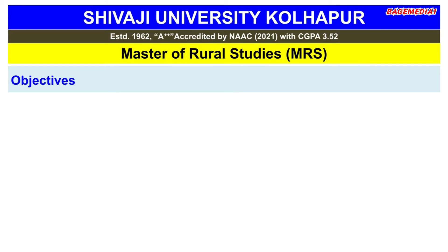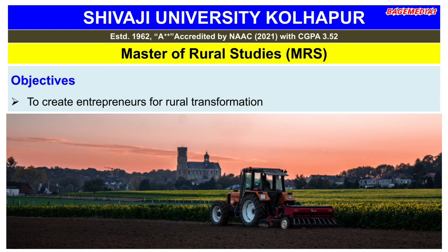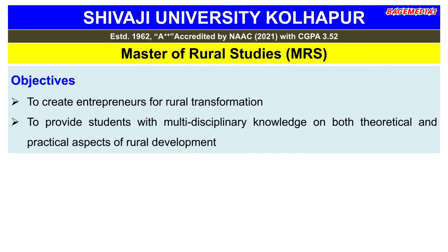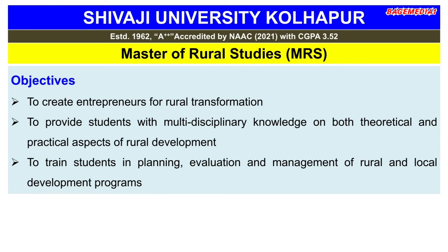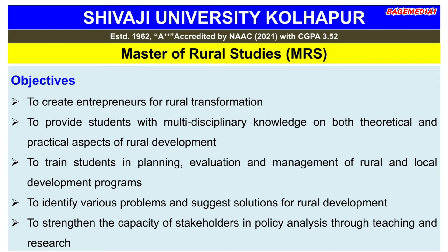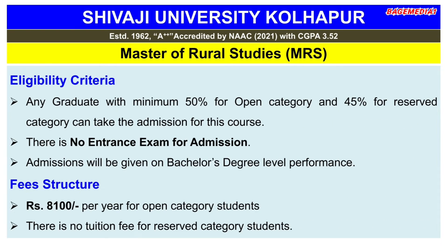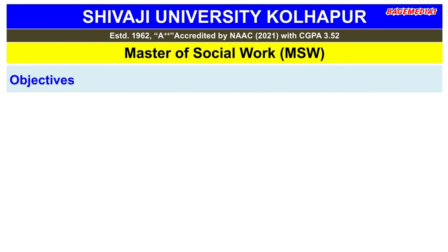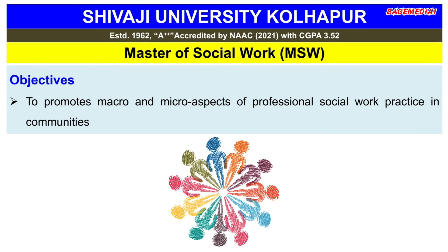The objectives of the MRS course are to create entrepreneurs for rural transformation, to provide students with multidisciplinary knowledge on both theoretical and practical aspects of rural development, to train students in planning, evaluation, and management of rural and local development programs, to identify various problems and suggest solutions for rural development, and to strengthen the capacity of stakeholders in policy analysis through teaching and research. This is the eligibility criteria and fee structure for MRS.